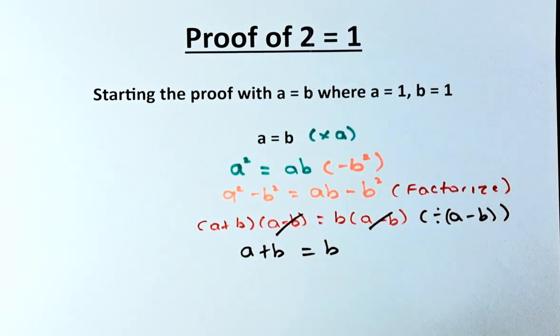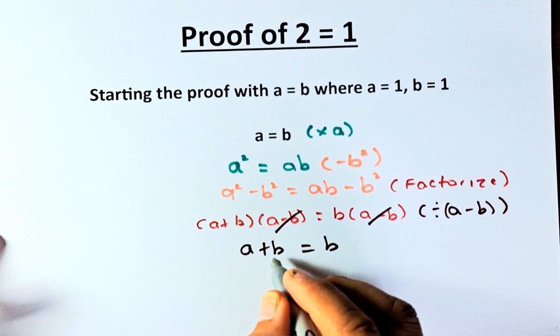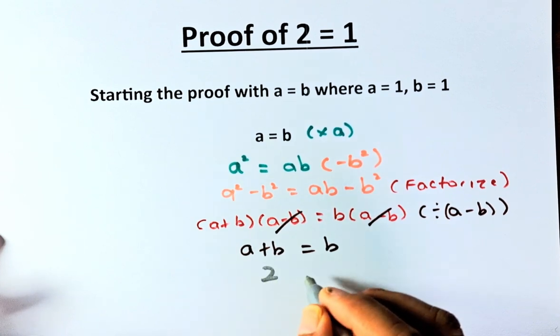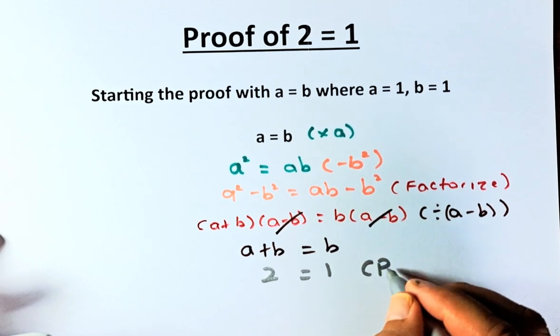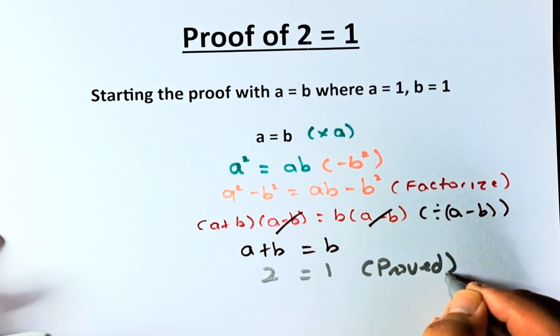So, and now, to conclude, A plus B is equal to B. If A is 1 and B is also 1, so 1 plus 1 is going to be 2. And B is equal to 1. So, we have proved that 2 is equal to 1.